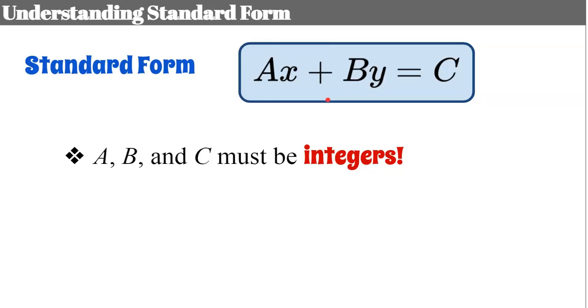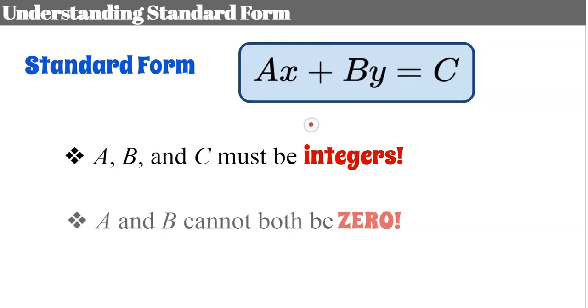A, B, and C must be positive or negative integers. Also, A and B can't both be zero — either A could be zero or B, but not both.